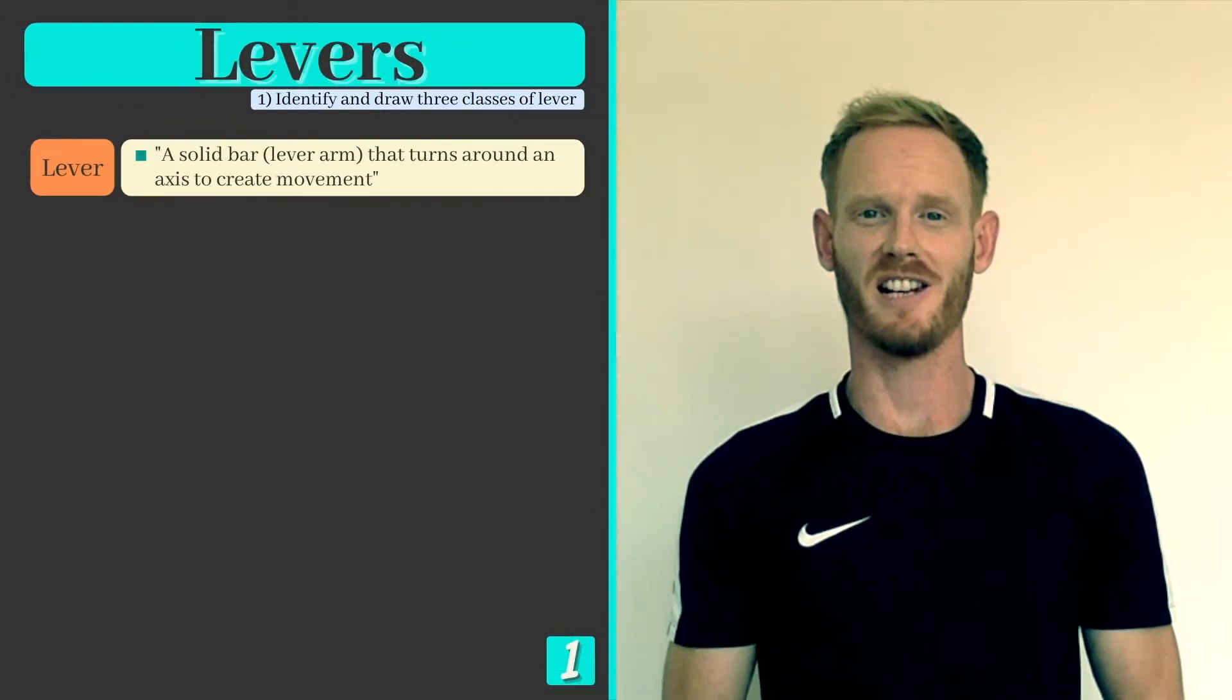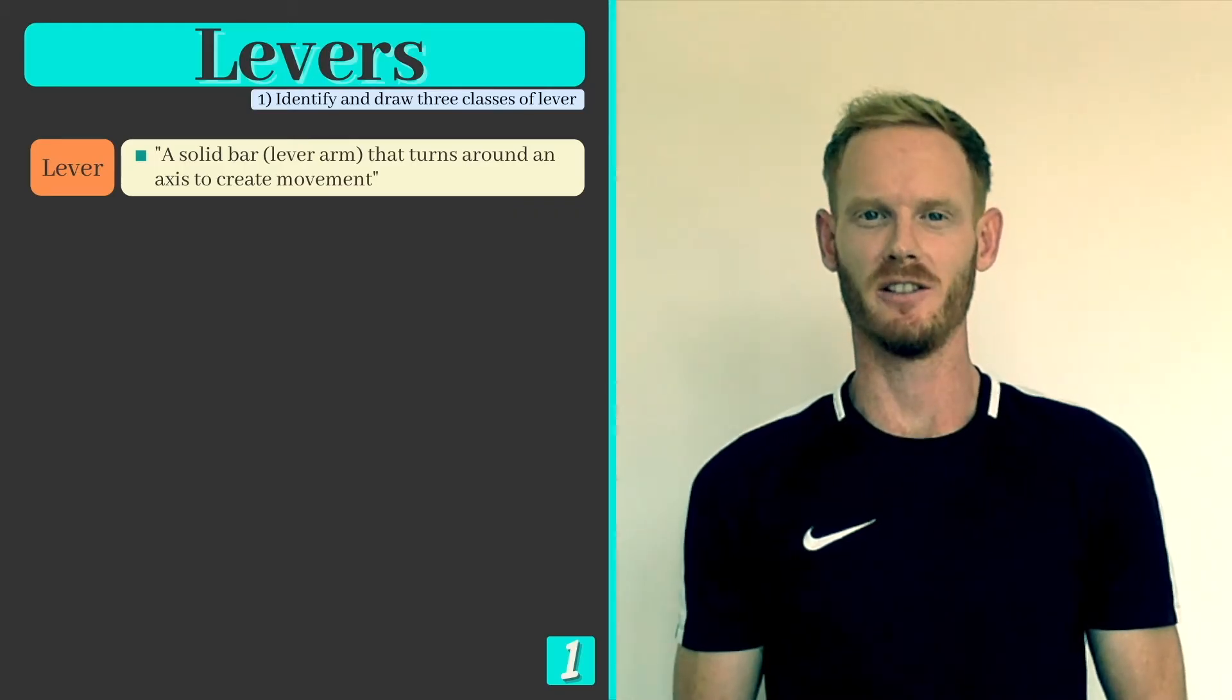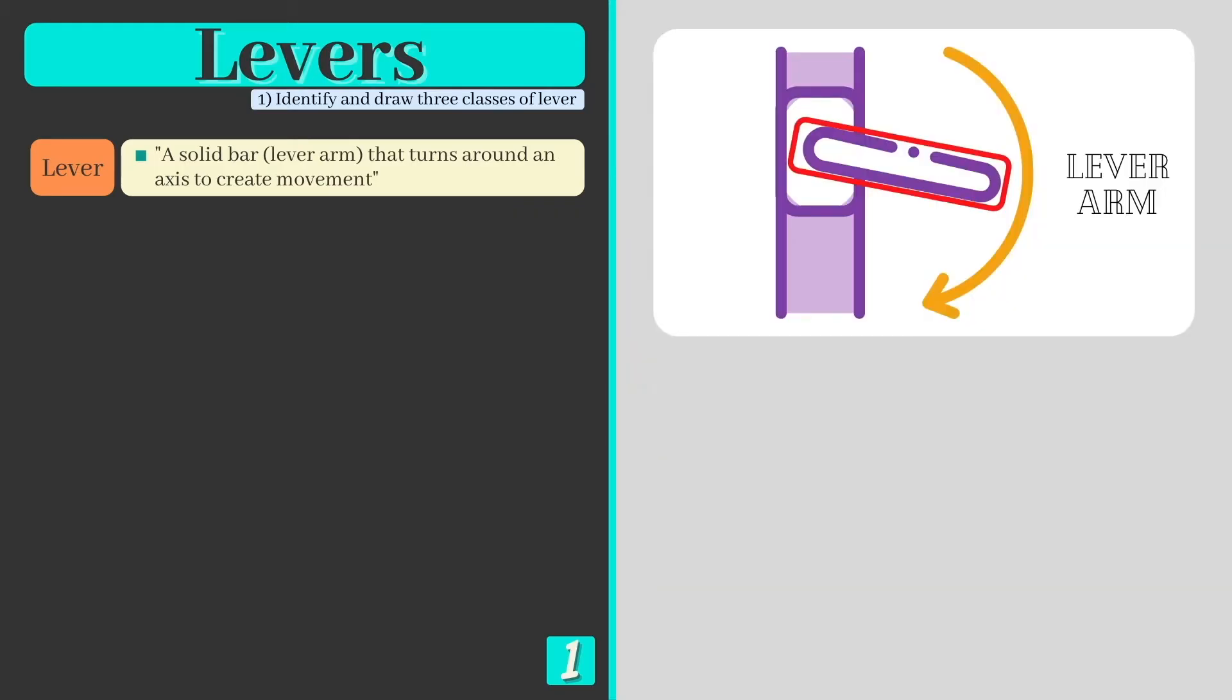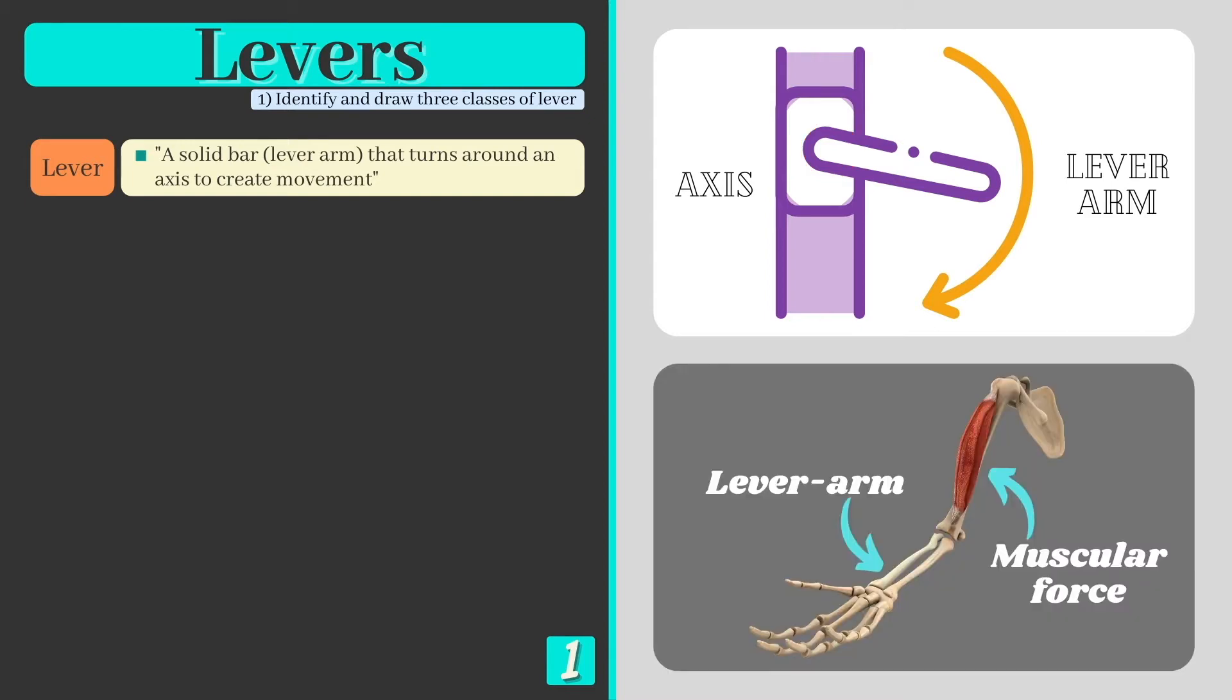All movements that an athlete performs are produced by levers. A lever is a solid bar or lever arm that turns around an axis to create movement. In the human body, lever arms are bones and the force required to create movement is produced by muscles.